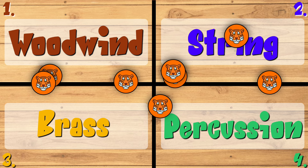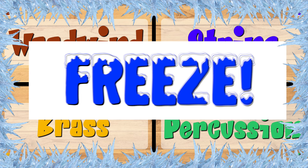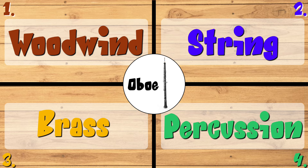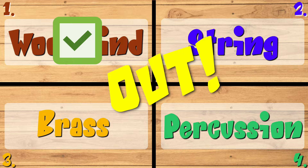Find corner one, two, three, or four. Which family is this instrument a part of? Let's listen again. Show with your fingers the family corner the instrument is in. The oboe is part of the woodwind family. So if you are in the woodwind family corner, sorry, you are out. On to the next round — ready, set, go.